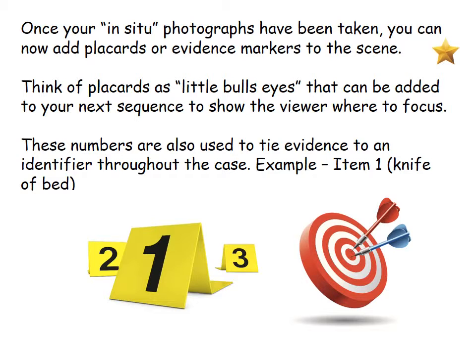These numbers are also used to tie evidence to an identifier throughout the scene. For example, we're going to make the knife item number one. We photograph it as item number one, and when we collect it, most likely the packaging will say item number one. If we impound it into an evidence system, we'll call it number one. If we create a diagram showing the scene and add in numbers to show where items were collected from, we'll place a number one in that location. So it's a way to remind viewers and case reviewers what this item was and what it was designated as.